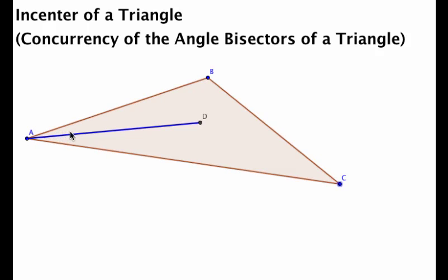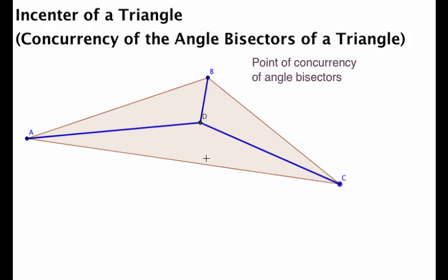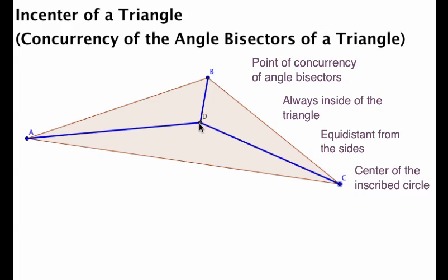So, to recap, the incenter of the triangle is the point of concurrency of the angle bisectors of the triangle. It is always inside of the triangle, regardless of if it's obtuse, acute, or right triangle. It is equidistant from the sides of the triangle, which makes it the center point of the circle that can be inscribed in the triangle.